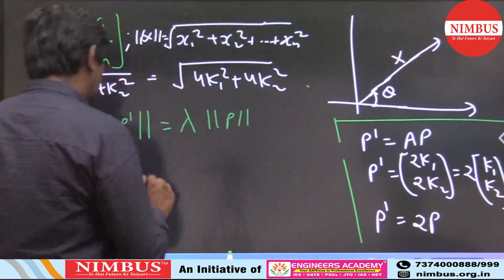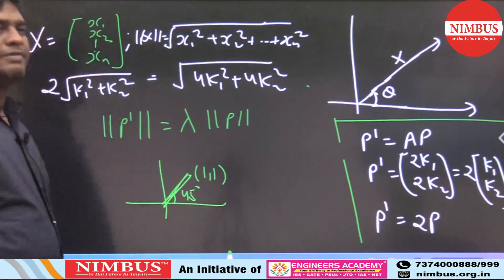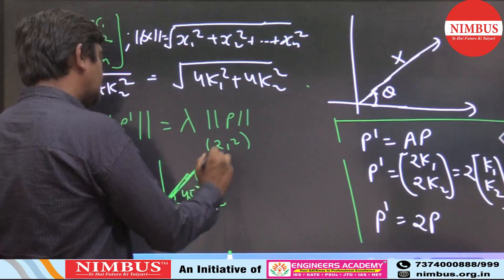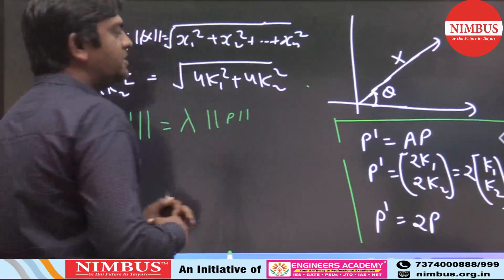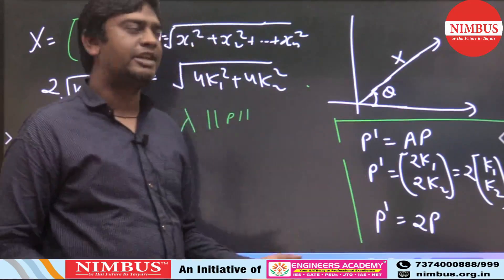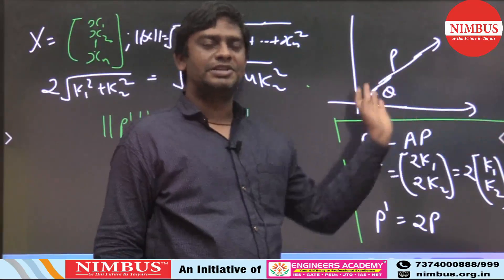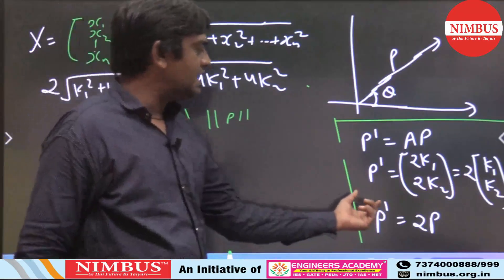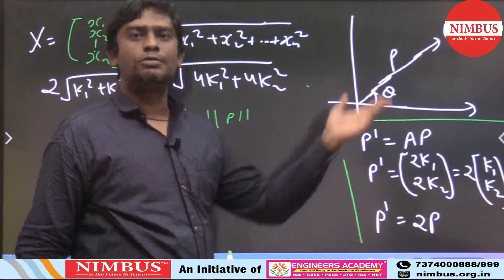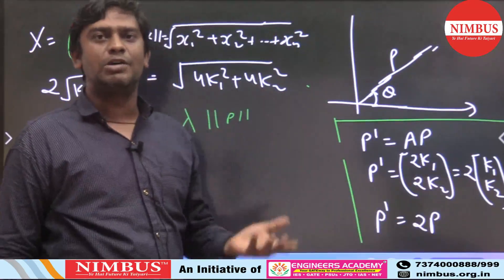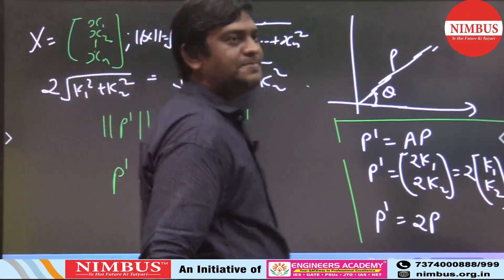Now consider the angle. For example, take the point (1,1) — it makes a 45-degree angle with the horizontal axis. Multiplying by 2 gives (2,2), which also makes a 45-degree angle. So the angle does not change. If P makes angle theta with respect to the horizontal axis, then P' = λ·P also makes angle theta with the horizontal axis in the anticlockwise direction.